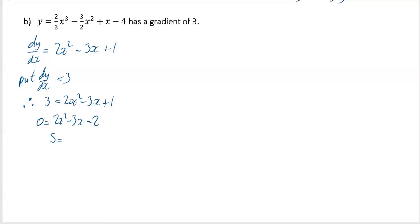My sum here is minus 3, my product is minus 4, so that's easy enough to see. Minus 4 equals 1 times minus 4, so there's my two numbers.